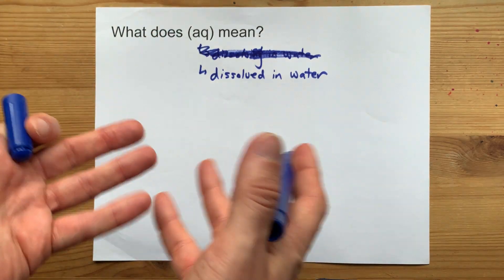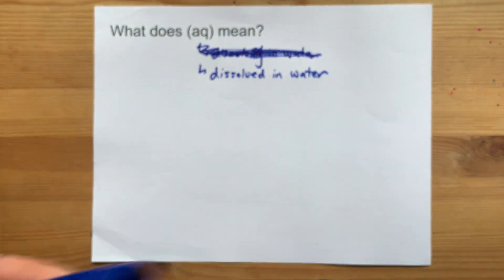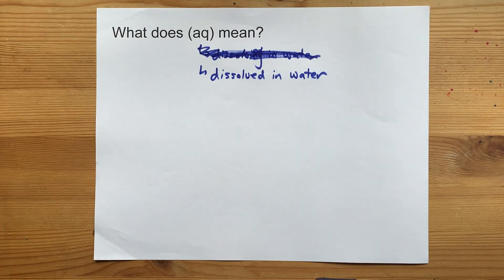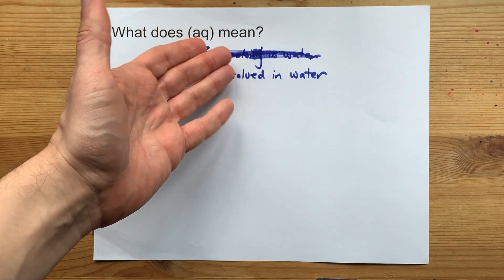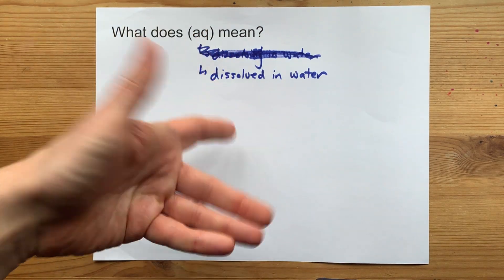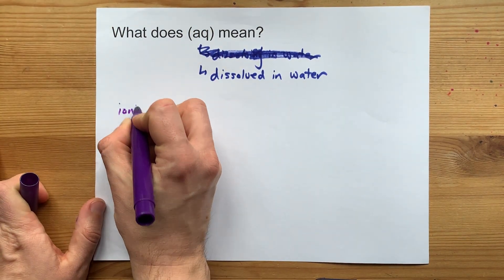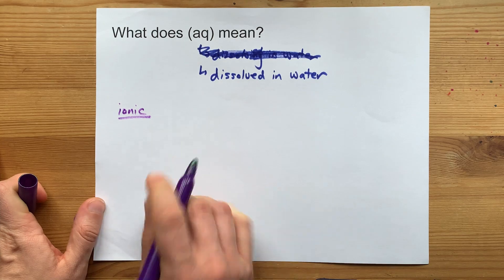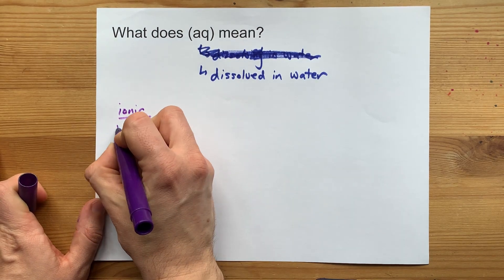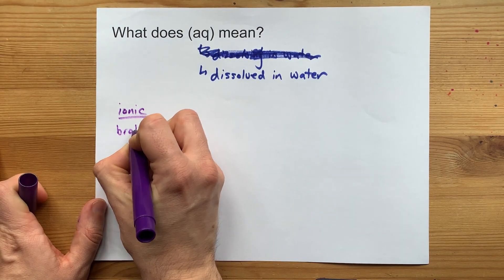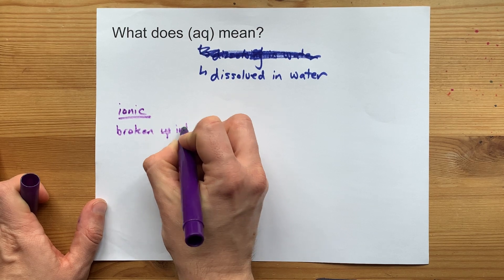You have Aquaman who has something to do with water — I don't know, I don't watch it. AQ does mean different things for different chemicals. However, on an ionic compound, it means it's been broken up into ions.